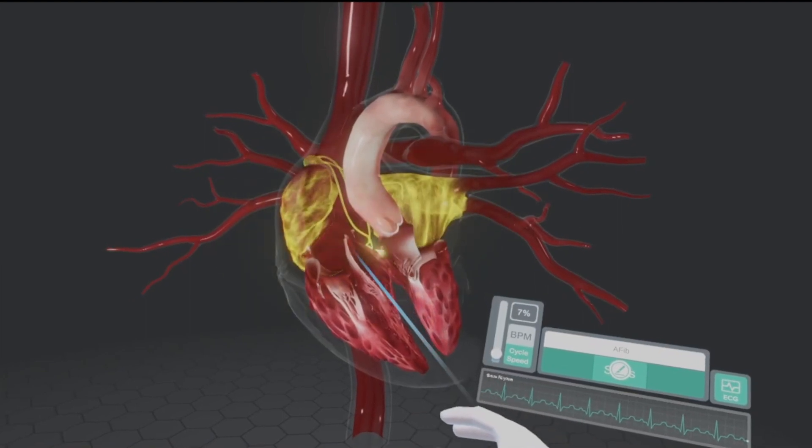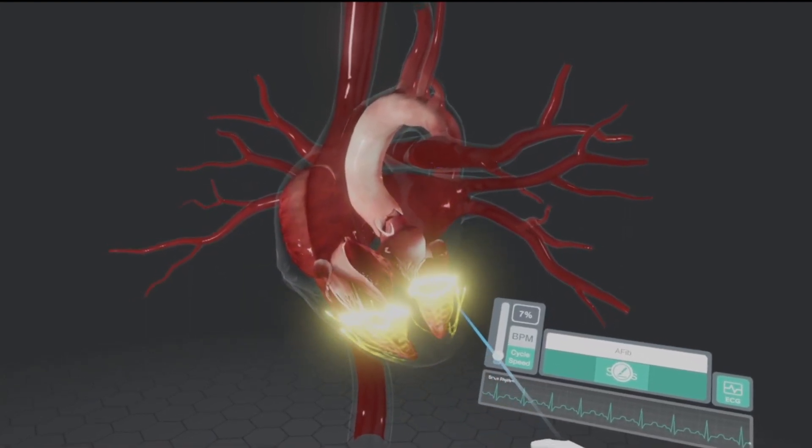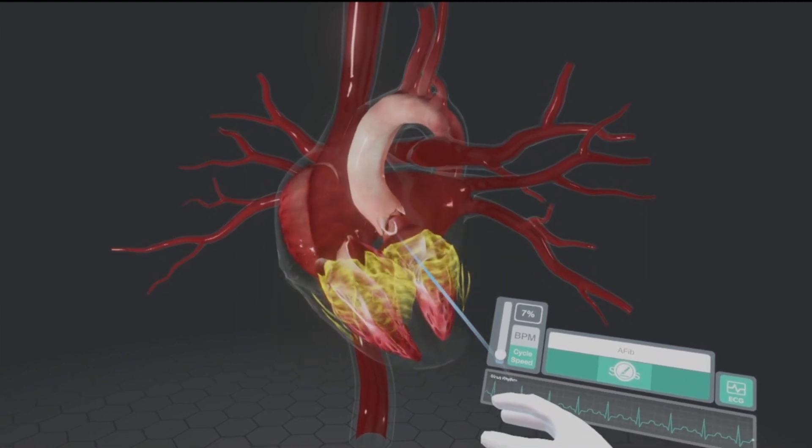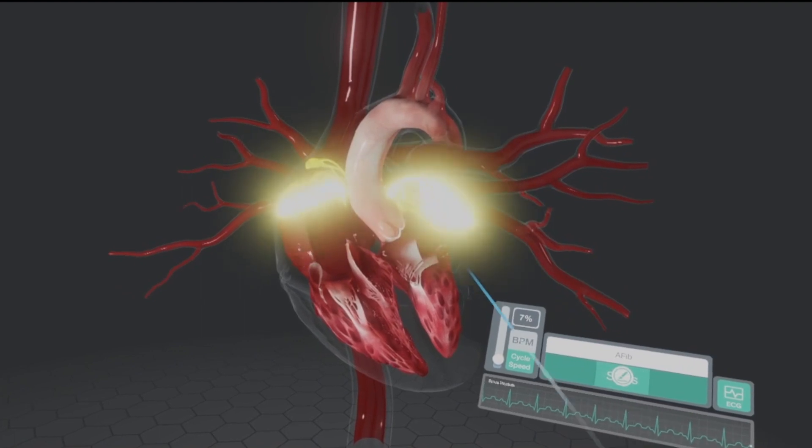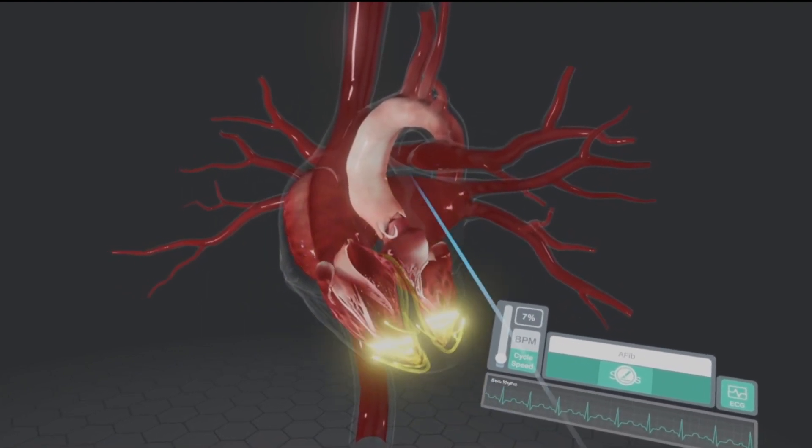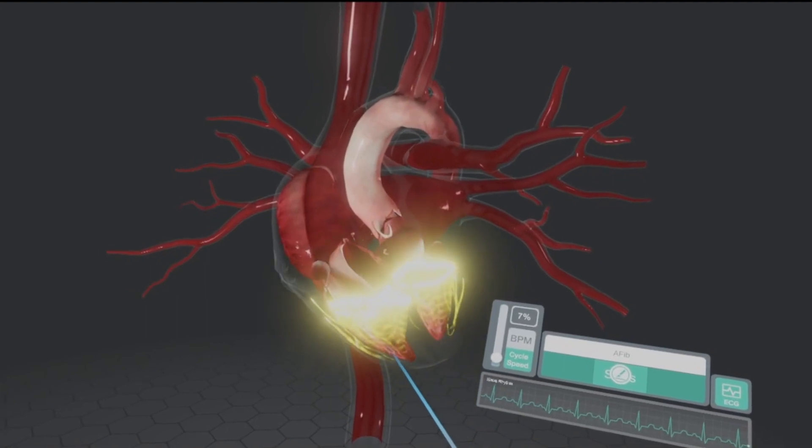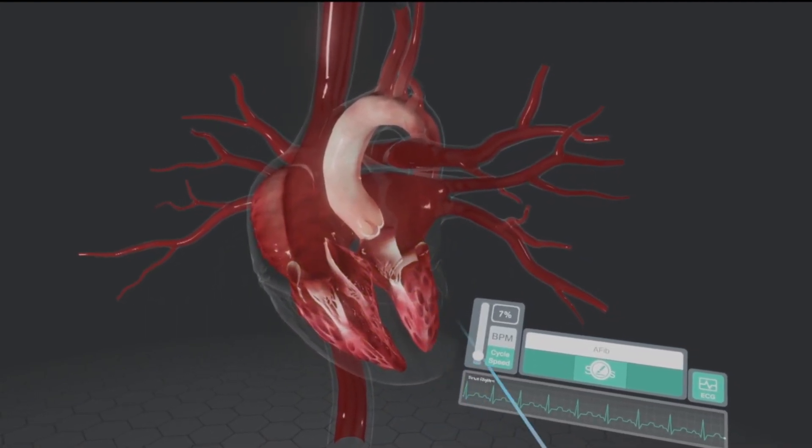So we get the atrial kick from right here, starting now. There's that atrial kick, tops off the ventricles, and finally the ventricles contract, pumping blood out of the aortic valve, through the aorta, and also through the pulmonic valve to the lungs. The right side to the lungs, the left side to the aorta, to the body.